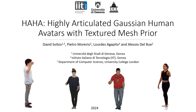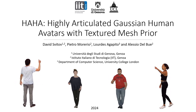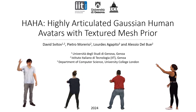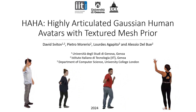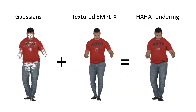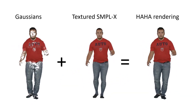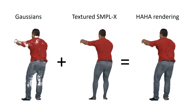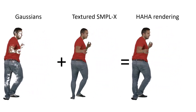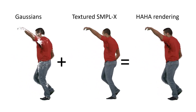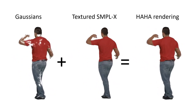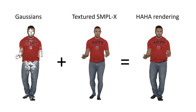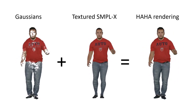We present HAHA, a novel approach for animatable human avatar generation from monocular input videos. The proposed method relies on learning the trade-off between the use of Gaussian splatting and a textured mesh for efficient and high-fidelity rendering. Our main idea is to learn to use the appropriate number of Gaussians, relying on a textured mesh where possible.